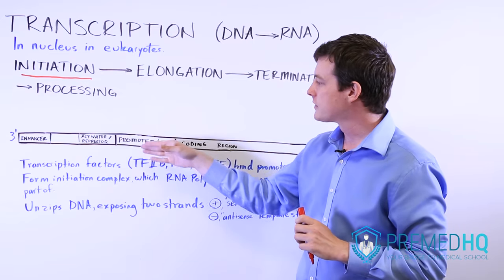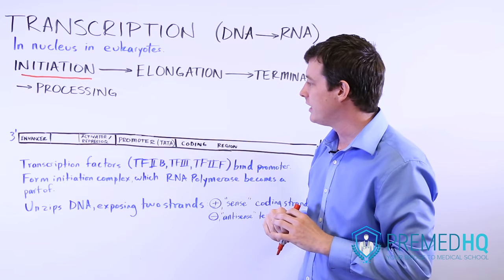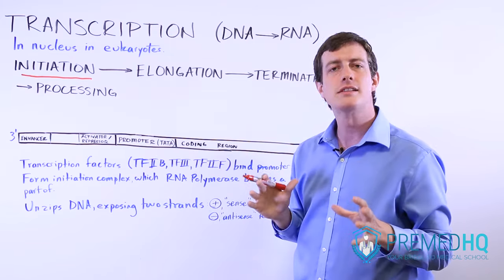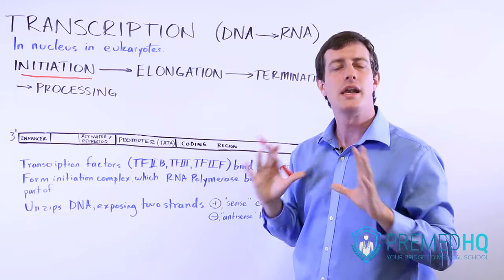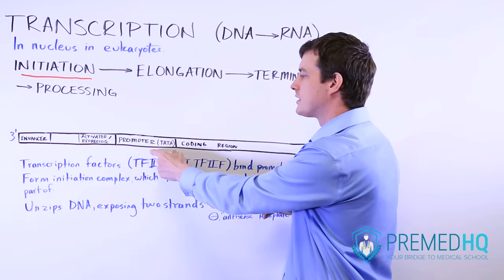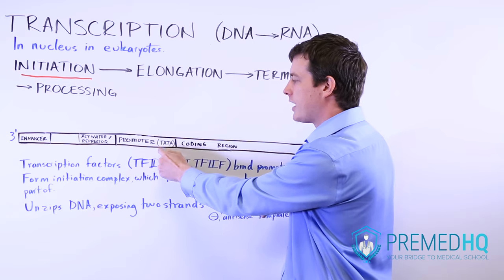The promoter will often have some sort of promoter sequence. Often it will be a consensus sequence when it occurs throughout many different genes. And you may also see it referred to as the TATA box, where it has the thymine, adenine, thymine, adenine group there.